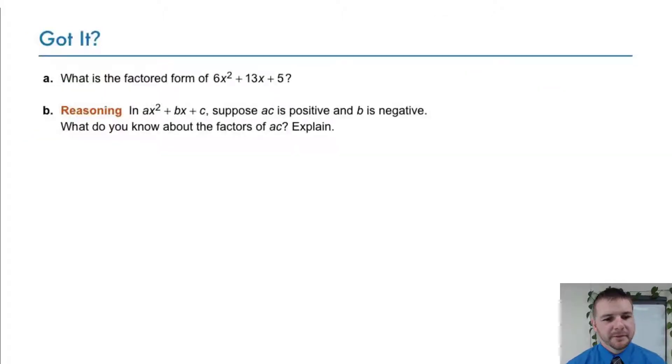Your turn. What is the factored form of 6x² + 13x + 5? And a reasoning item? In ax² + bx + c, suppose ac is positive and b is negative. What do you know about the factors of ac? Explain.